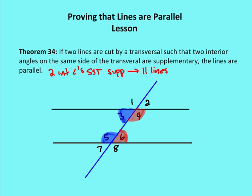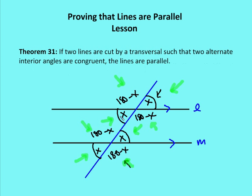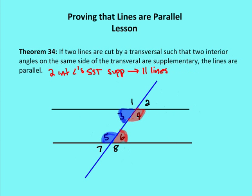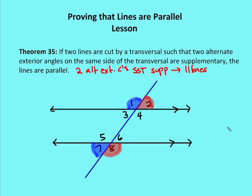Theorem 34: if two lines are cut by a transversal such that two interior angles on the same side of the transversal are supplementary, then the lines are parallel. Going back to the diagram, we have angles of 180 minus X and X on the same side — those are supplementary to each other. So if angle 3 is supplementary to angle 5, then line L is parallel to line M.